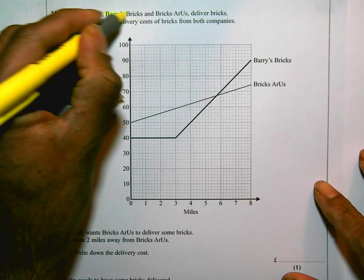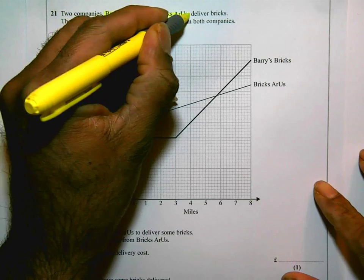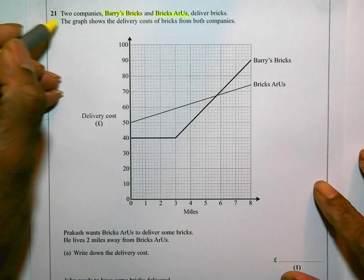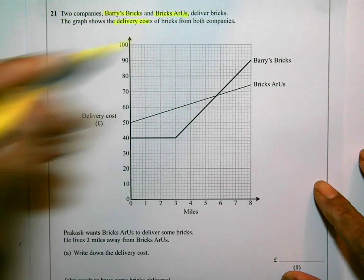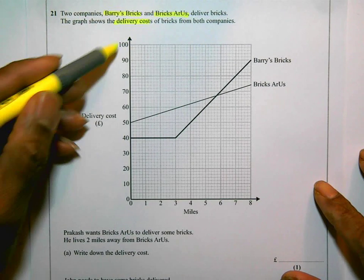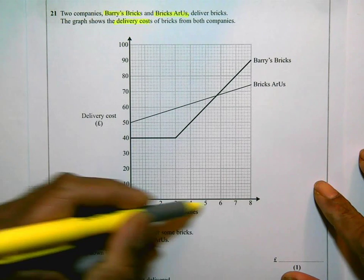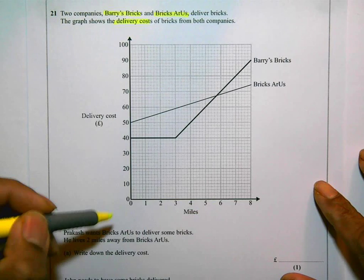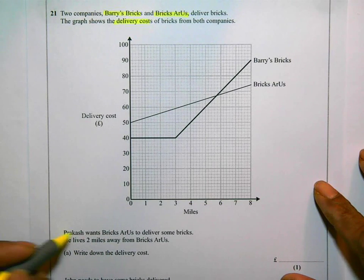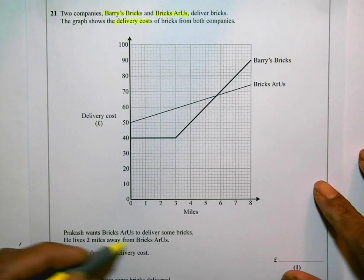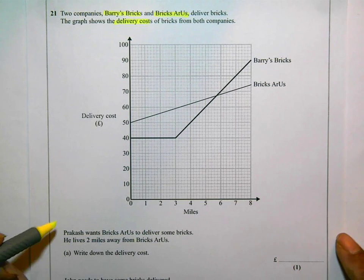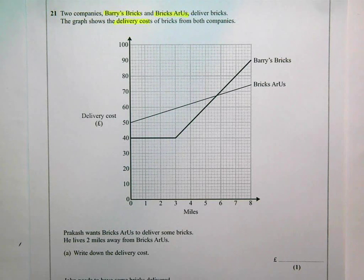Two companies, Barry's Bricks and Bricks Are Us, deliver bricks. The graph shows the delivery cost of bricks from both companies. That's the delivery cost and that's miles, maybe it's distance away. Prakash wants Bricks Are Us to deliver some bricks. He lives two miles away from Bricks Are Us. Write down the delivery cost.